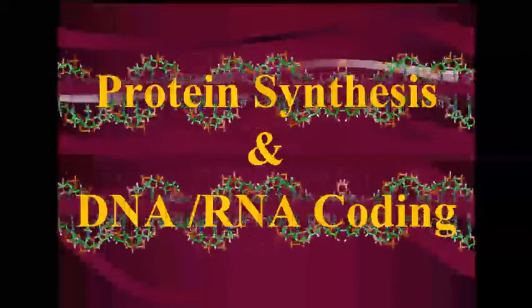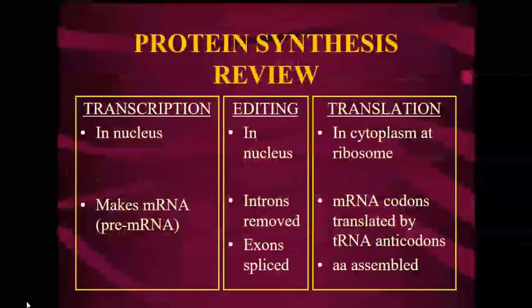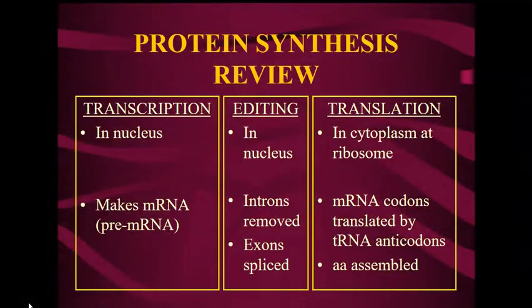This is going to go over how to do DNA and RNA coding in terms of protein synthesis. Protein synthesis has three parts: transcription, which takes place in the nucleus and makes mRNA — technically pre-mRNA or the primary RNA transcript. There's an editing process in the nucleus where introns are removed and exons are spliced together. Then there's translation, which takes place in the cytoplasm at a ribosome, where mRNA codons are translated by tRNA anticodons and amino acids are assembled into a protein.